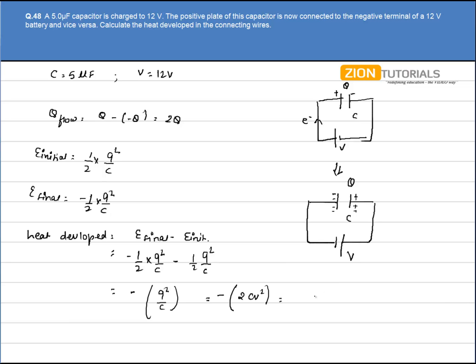On substituting the value we have minus 2. Capacitance is given as 5μF and potential is 12, that is 12 into 12. So the answer comes out to be 1.44 mJ.